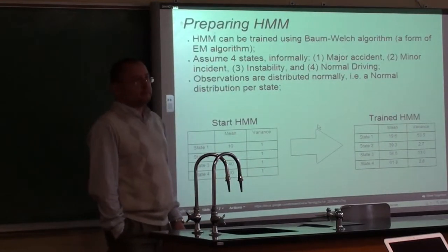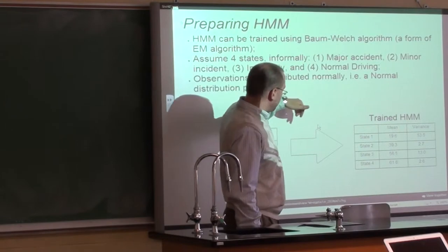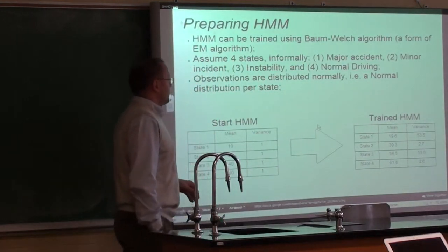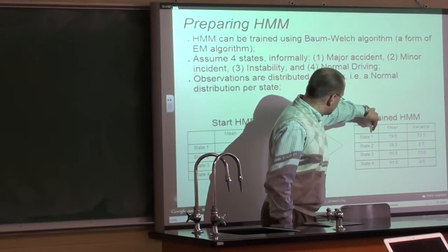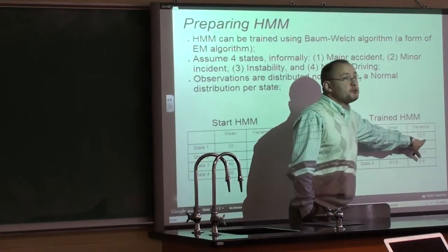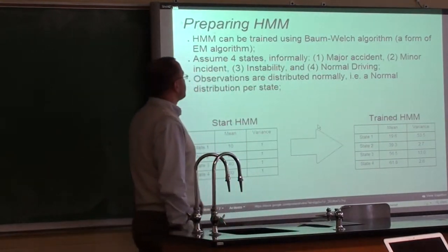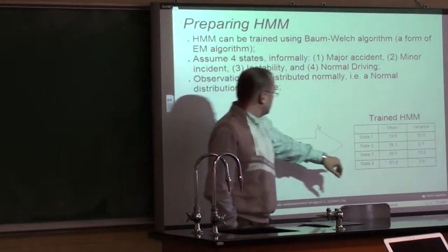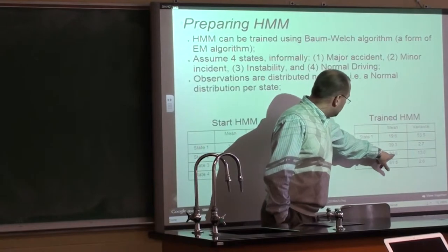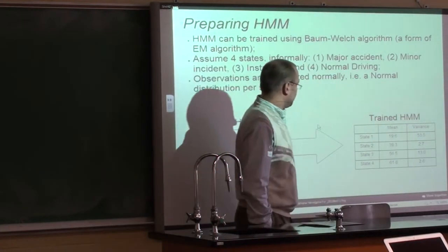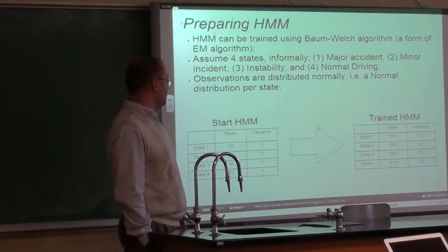When we ran the training and showed the model the March 3rd data, the model actually readjusted the parameters. For state one, the mean is now 19.6 with a huge variance of 53.5. For state two — our minor incident state — the mean is 39.3 and the variance is low, which is good. For state three, mean is 56.5, also high variance. And state four, normal driving, has a mean of 61.8 and a very low variance of 2.6.